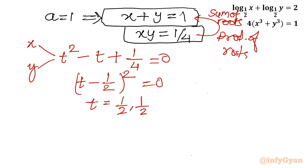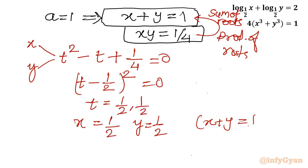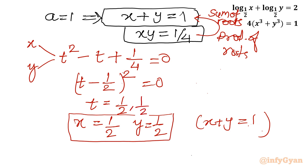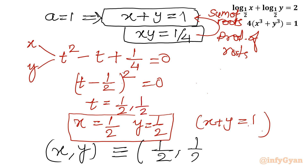Since t represents x or y, if t equals one half then x equals one half, and since x plus y equals 1, y also equals one half. Both values are equal, so our ultimate solution is the ordered pair one half comma one half. This is our final answer.